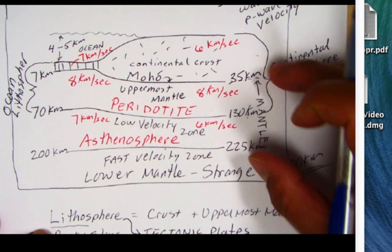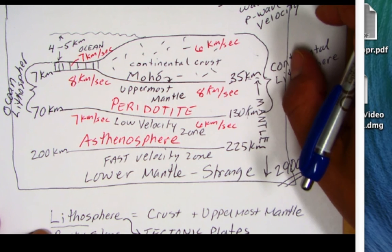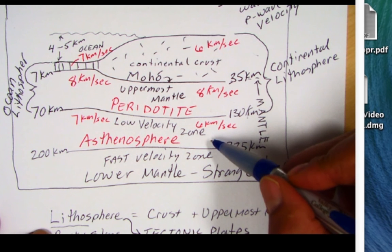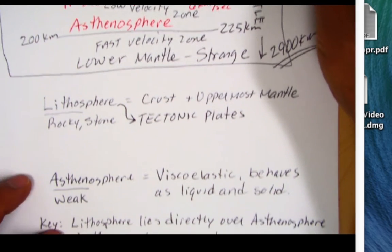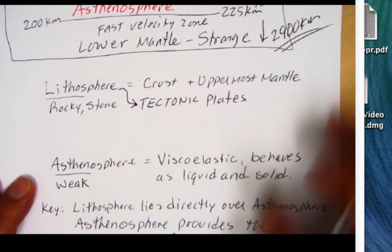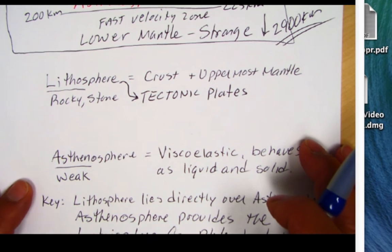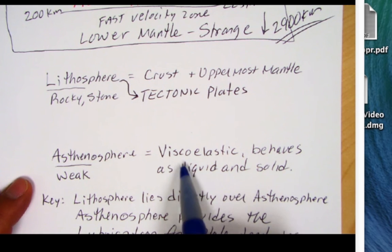But the key thing is this asthenosphere lying directly beneath the lithosphere, these tectonic plates. So let's go down here and I have this asthenosphere. The asthenosphere is kind of a strange substance. It's called a viscoelastic.